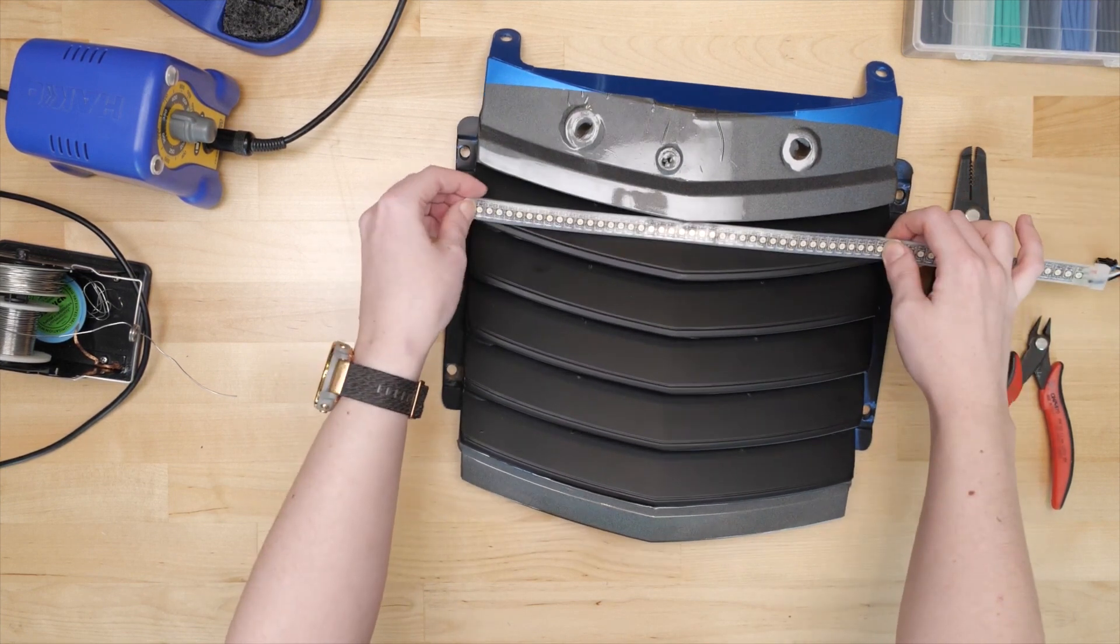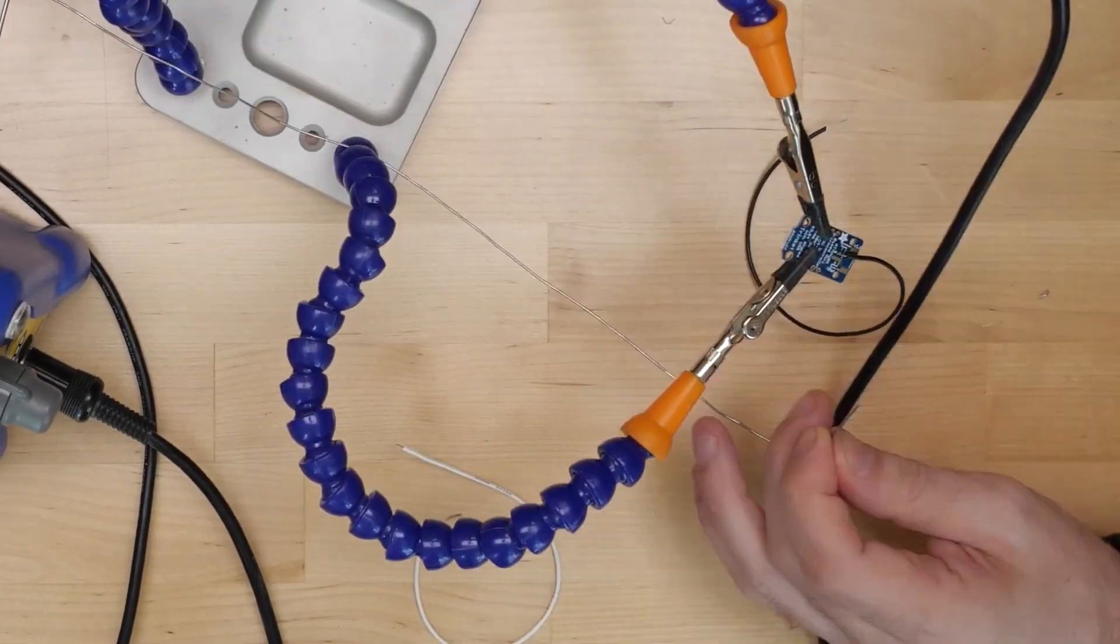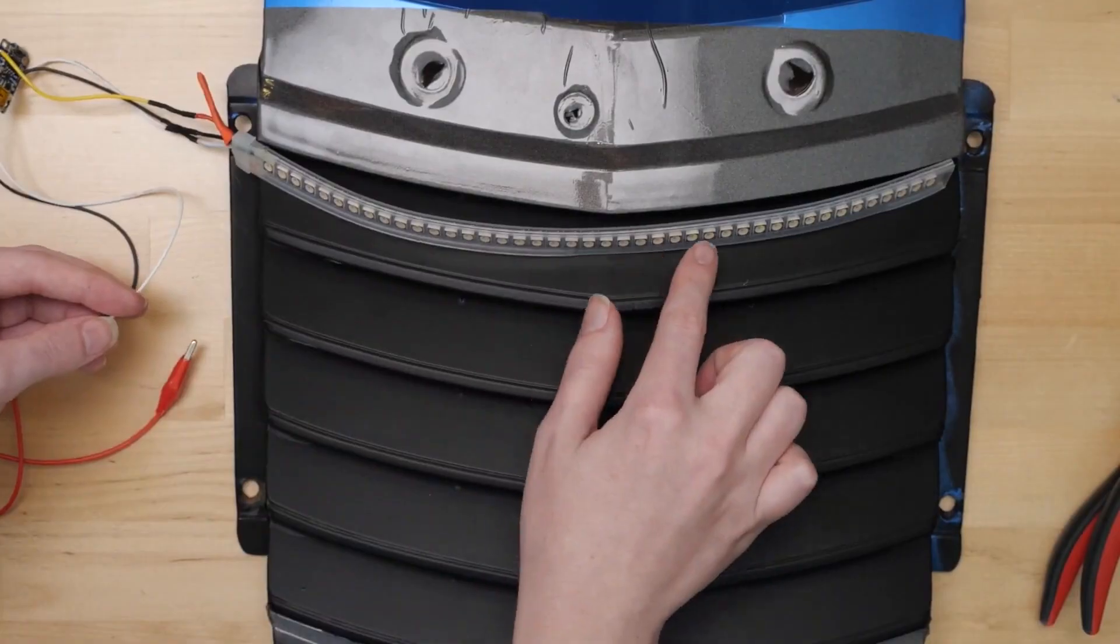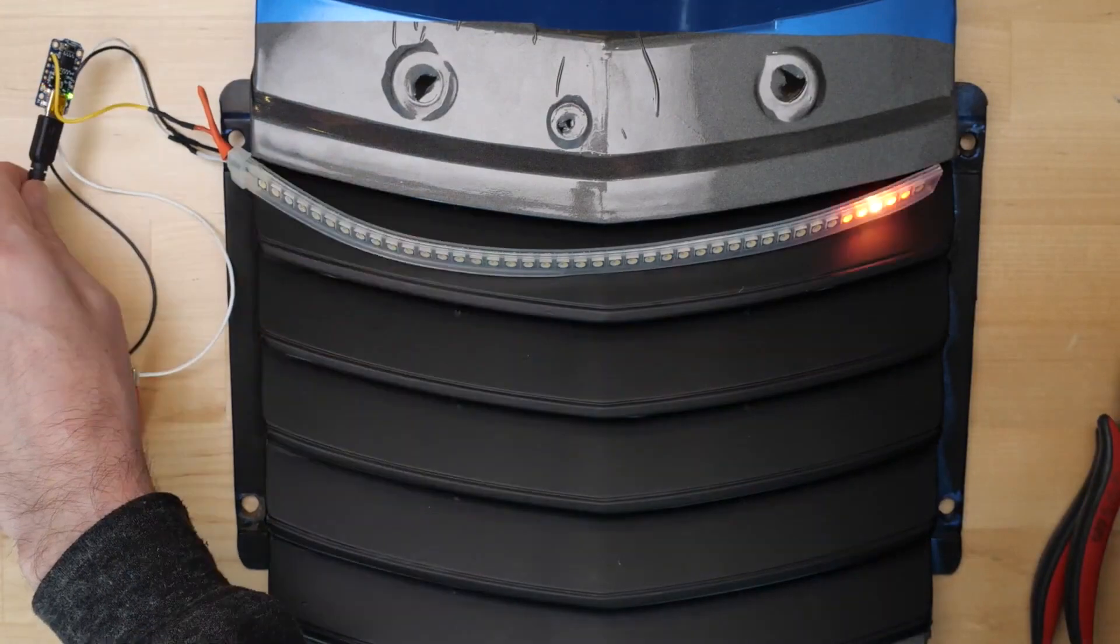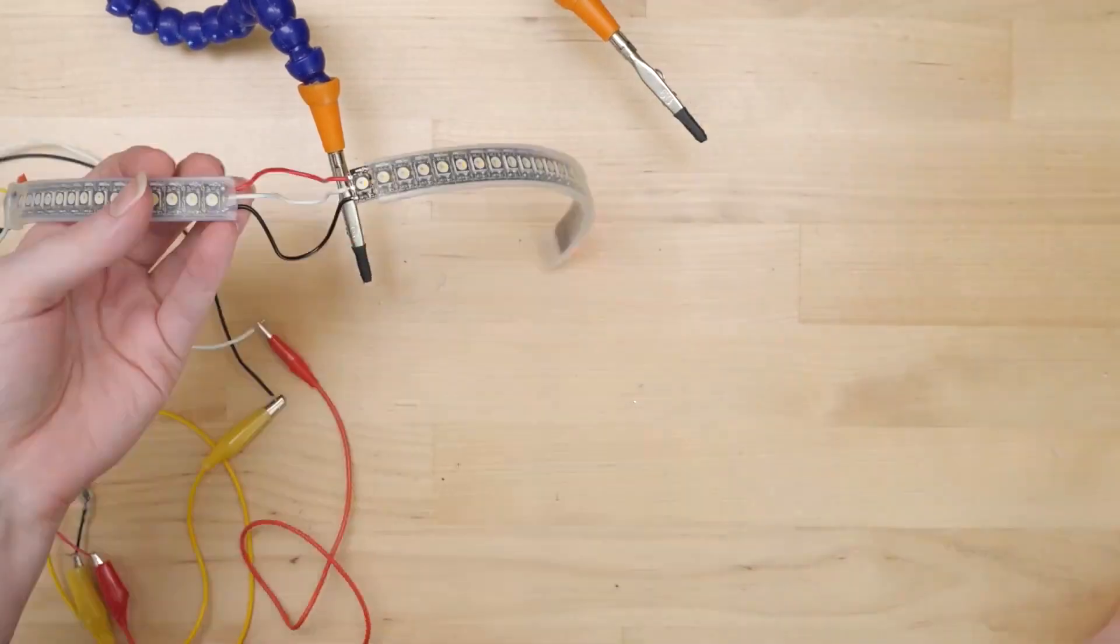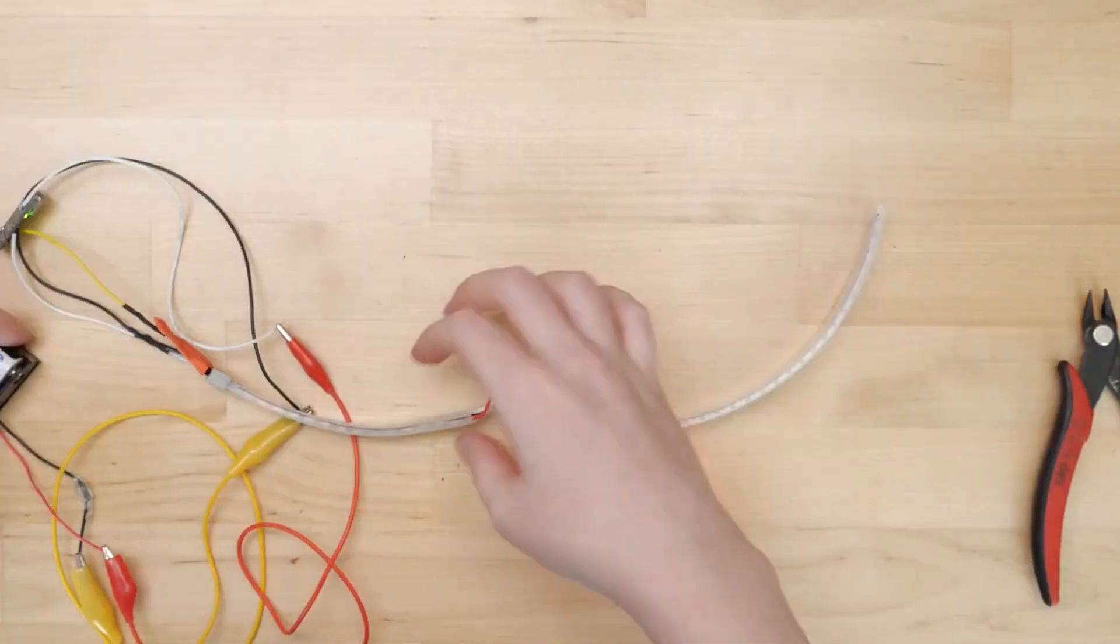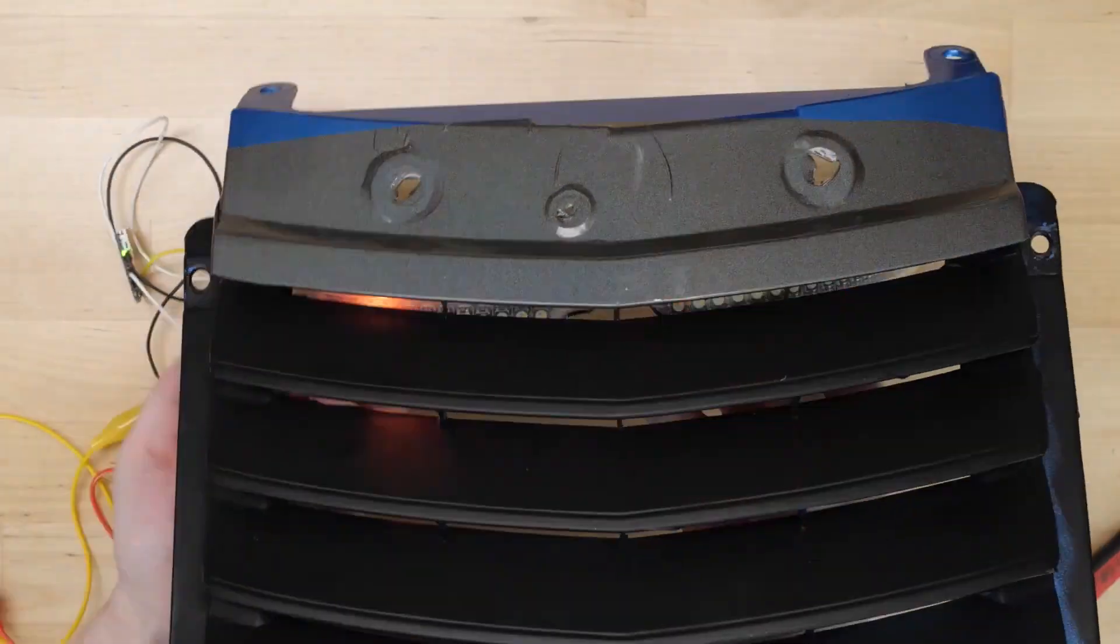Becky is using a 5-volt trinket board attached to a short strip of neopixels. For the code, she's using an existing Arduino sketch from Phil B. What surprised me is that she's actually powering the trinket directly from the scooter's 12-volt battery.